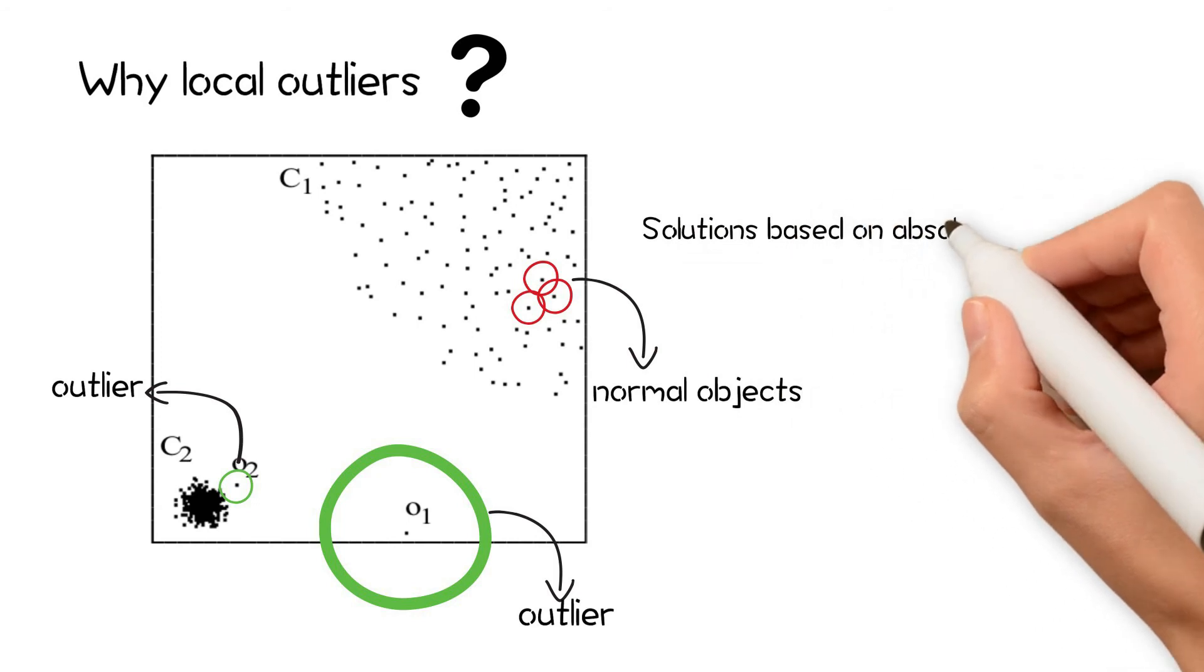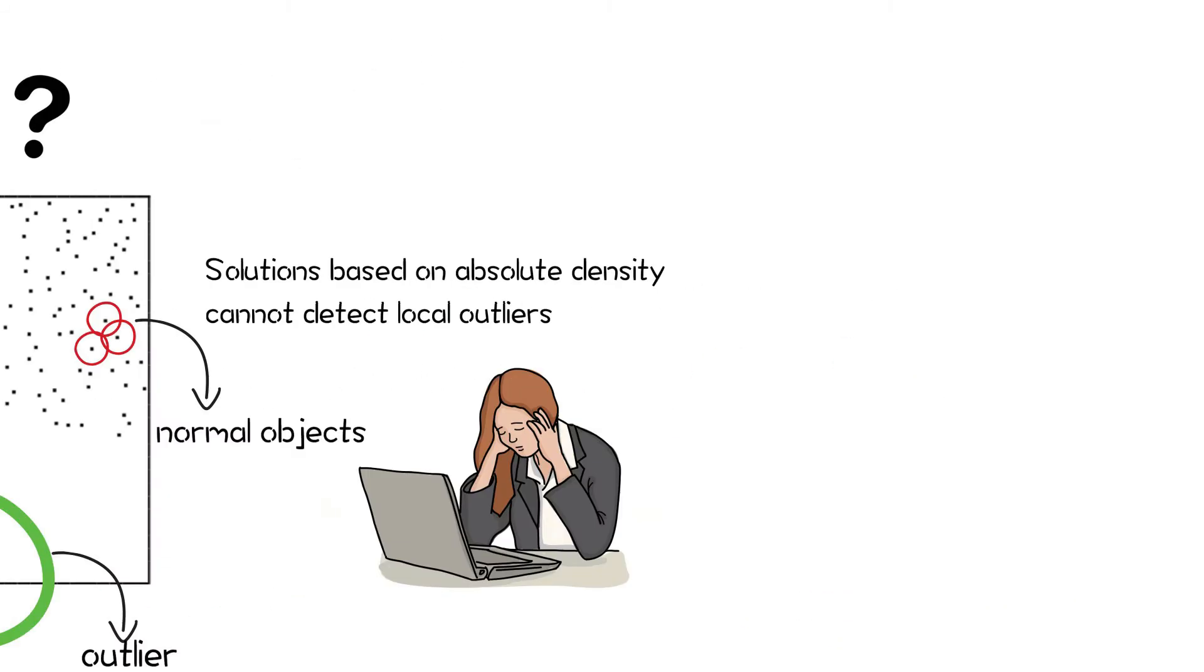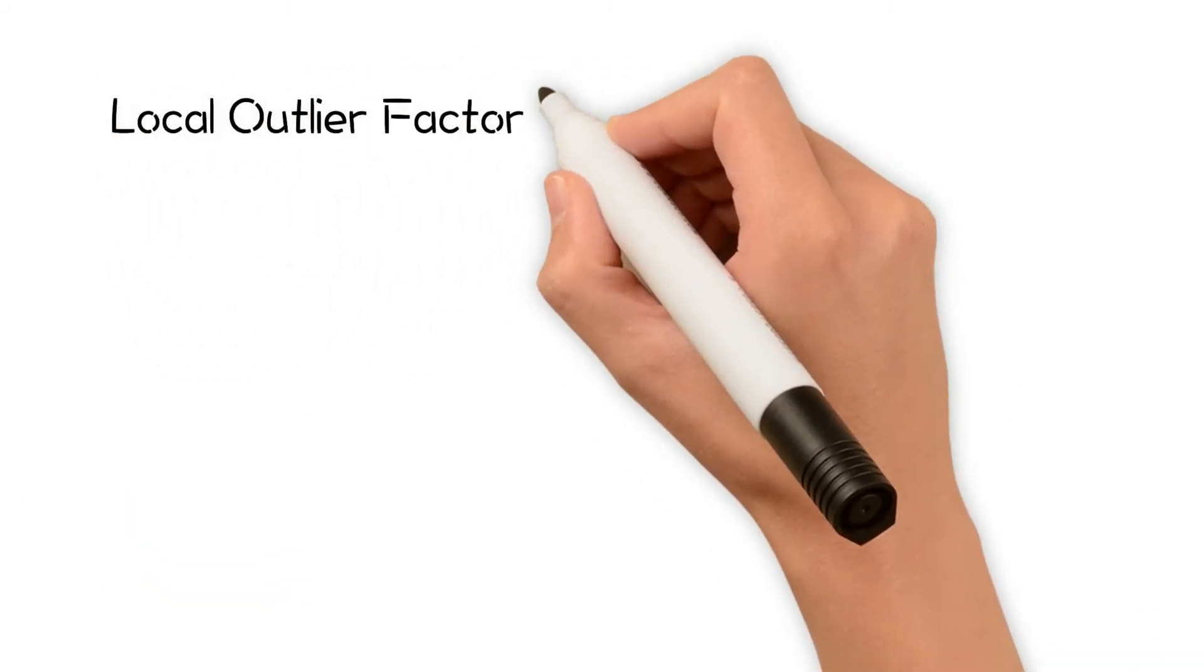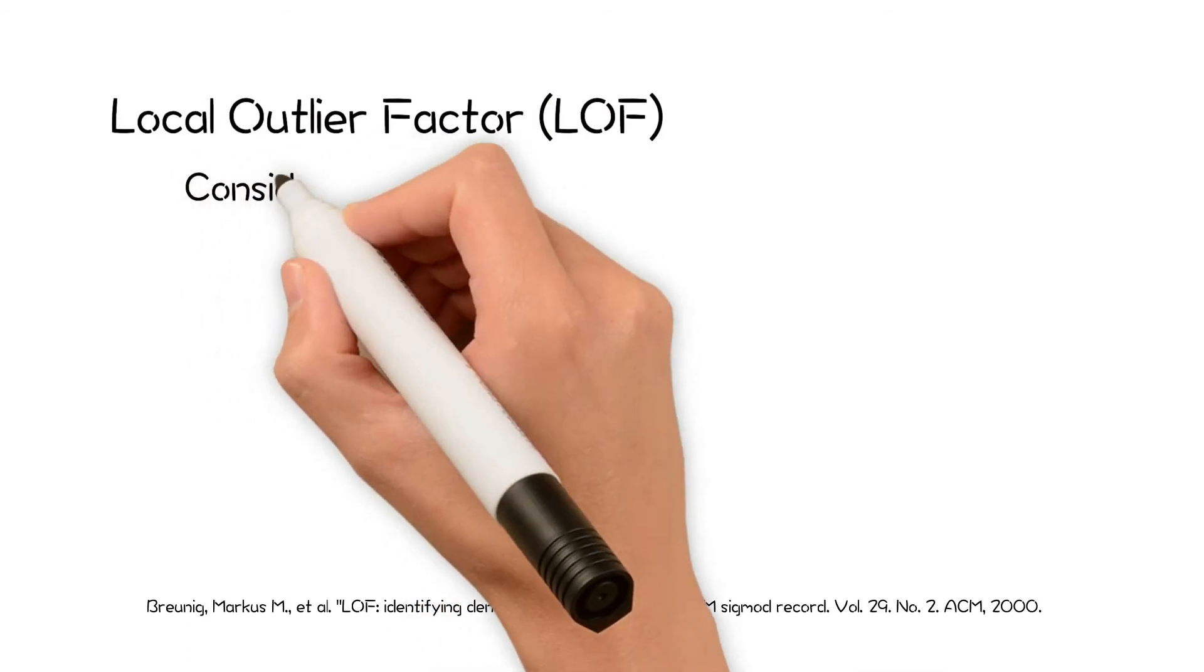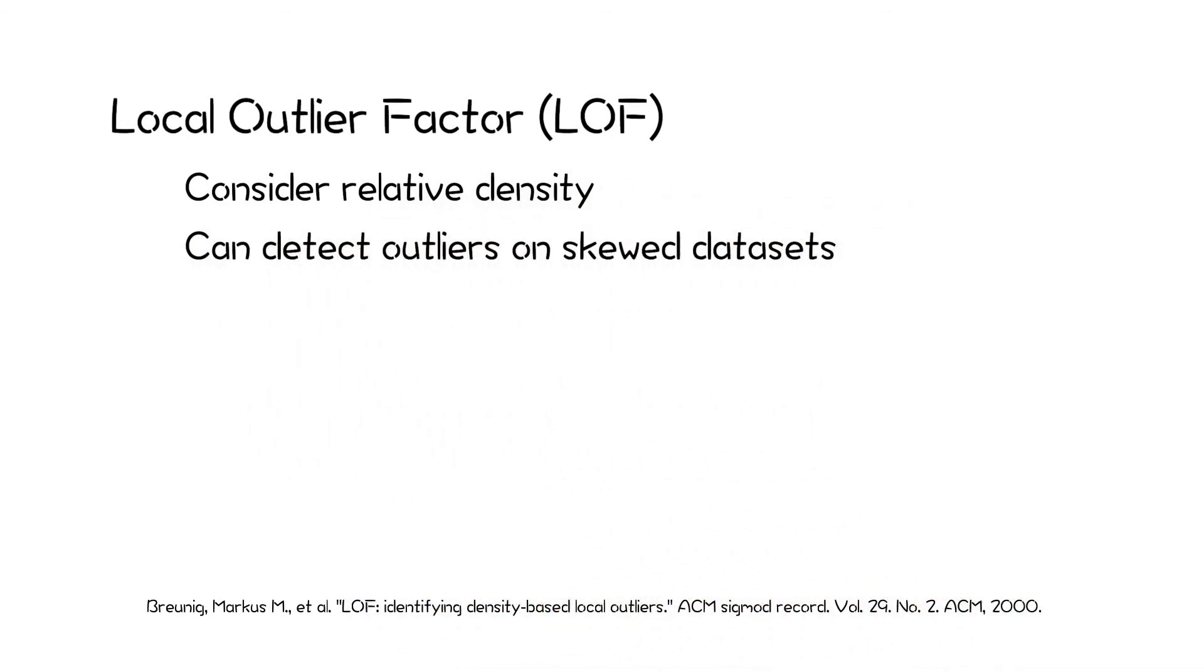Solutions based on absolute density cannot detect local outliers. The Local Outlier Factor, or LOF algorithm, considers the relative density of data points. It can detect outliers on small datasets and can detect both local and global outliers.